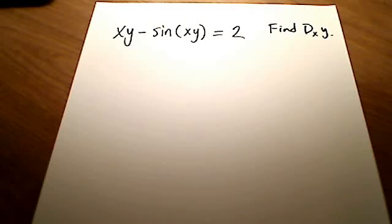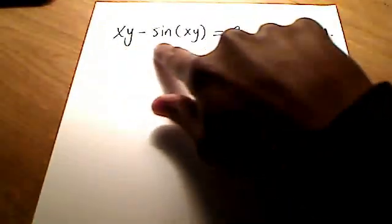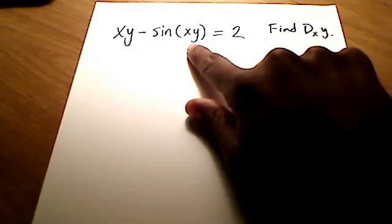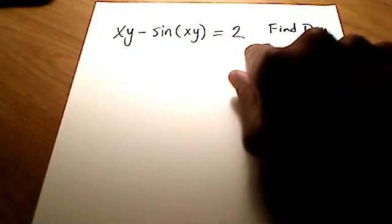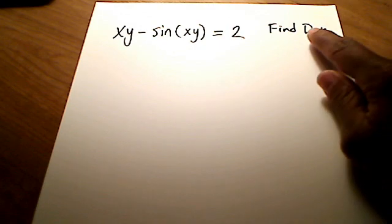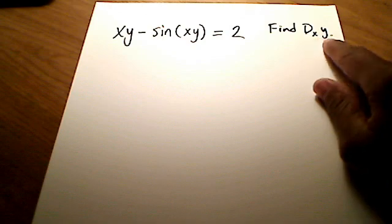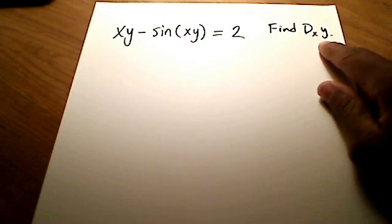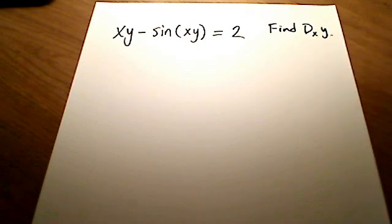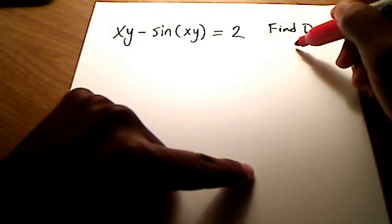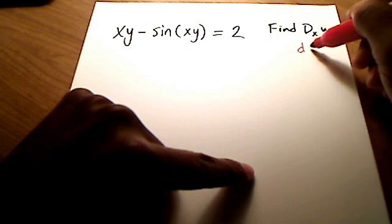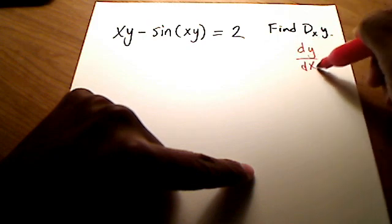In this problem, we have an equation: xy minus sine, and the argument of sine is xy, equals 2. They want us to find dy/dx — that's what the notation d sub xy means. It's just a fancy way of saying, can you find the derivative of y with respect to x?